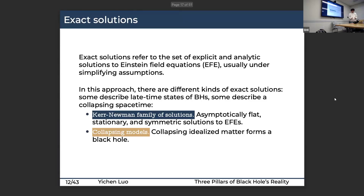Now the first pillar: exact solutions. These refer to the set of analytic and explicit solutions of the Einstein equations derived under simplifying assumptions. There are many different kinds: some describe the late-time states of black holes, some describe collapsing spacetimes. Two representatives are the Kerr-Newman family — describing asymptotically flat, stationary, axisymmetric solutions of the Einstein equations — and solutions representing collapsing spacetimes, which model an idealized collapsing matter configuration forming a black hole.